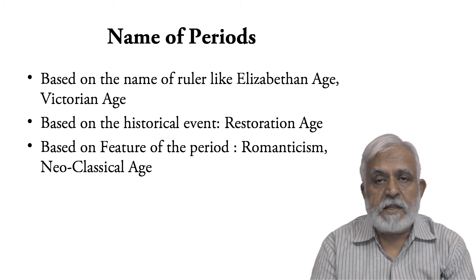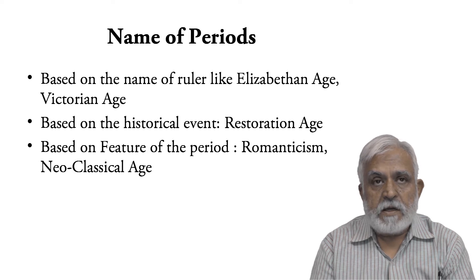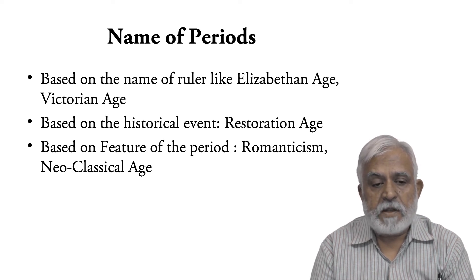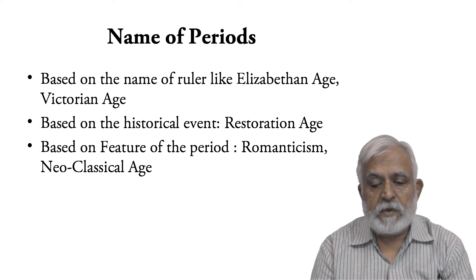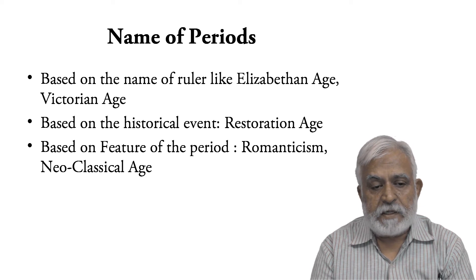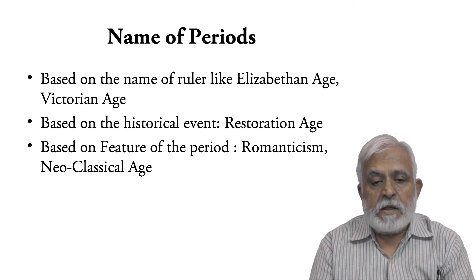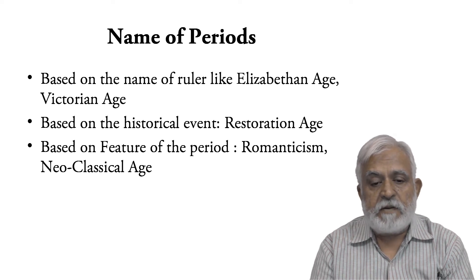History of anything is divided into a number of periods, and mostly the name of periods are either based on the name of the ruler — like the Elizabethan age, when Queen Elizabeth I was the ruler of England, or the Victorian age, when Queen Victoria was the ruler of England.